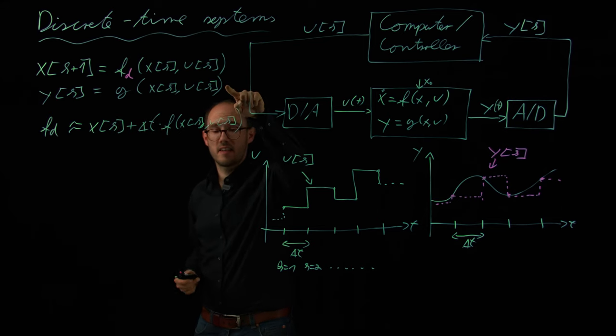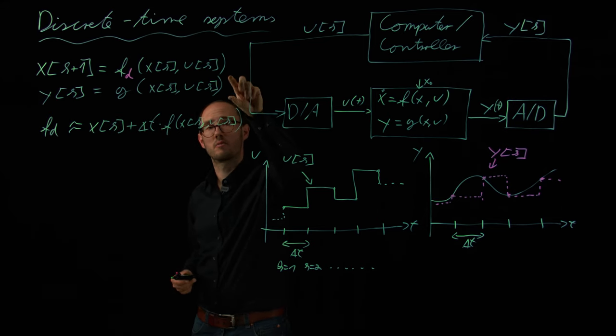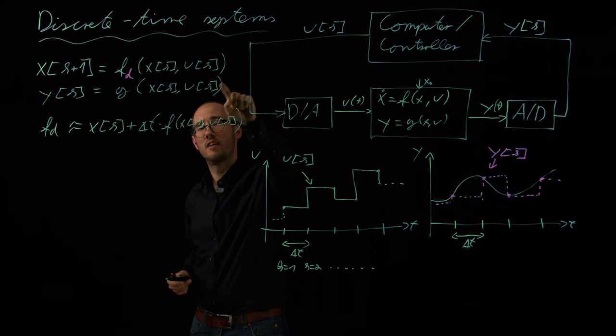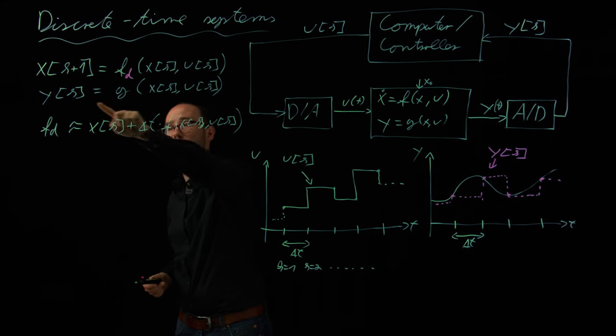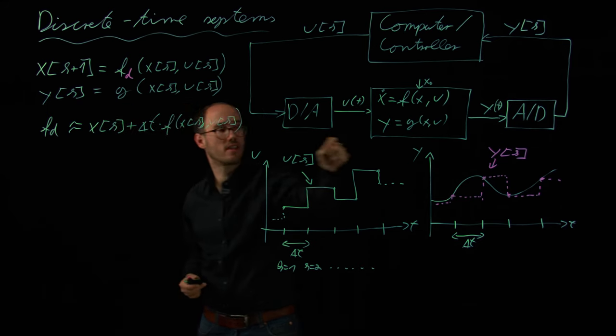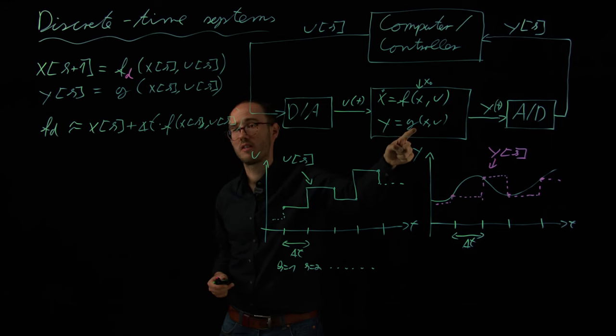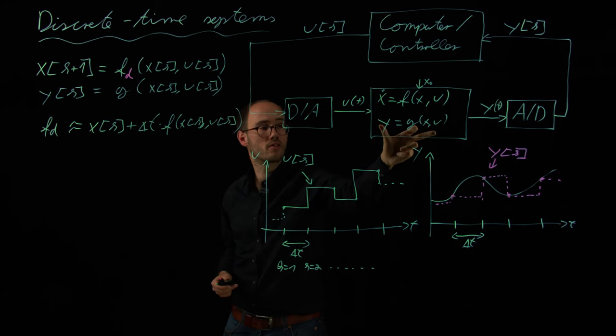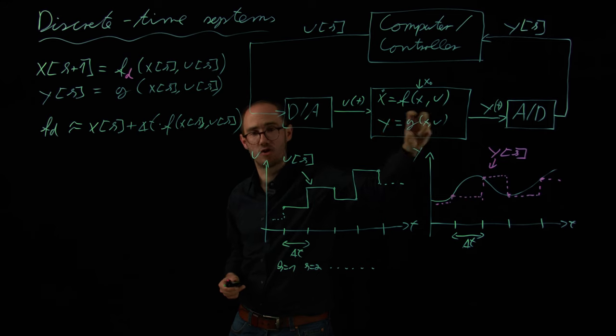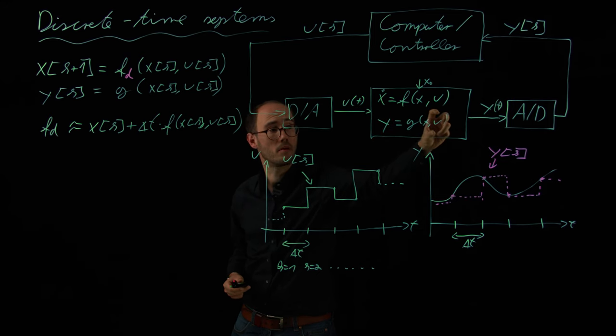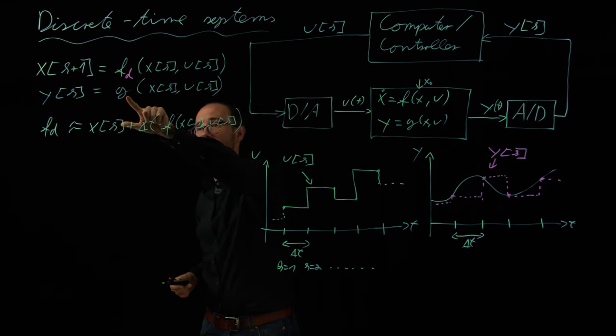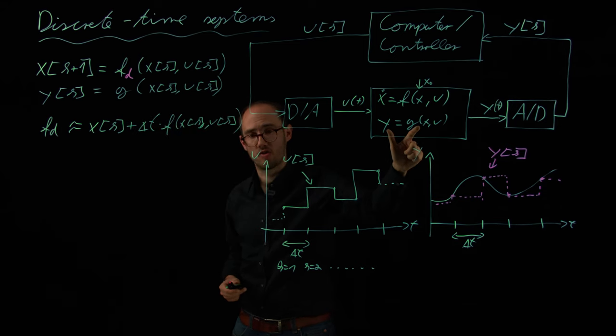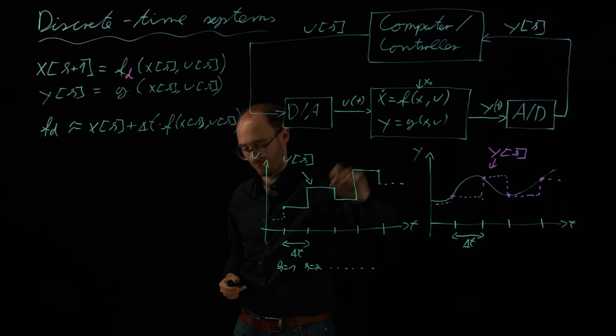There are also other approaches, but we will not go here into details. On the other side, this function g, which is representing the output equation, this is actually the same equation as in the continuous time model. Because in the continuous time model, this is an algebraic equation, just a static equation, so it does not depend on time. So this g here is actually the same g as here.